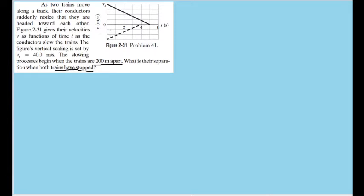As we can see here from the graph, we can see where the velocities of each train reach zero, indicating where they have stopped. Now in order to find the train's final separation, we'll first want to figure out how far each train actually managed to travel as they were decelerating — in other words, we want to find the displacement of each individual train.